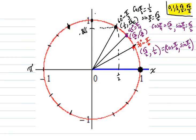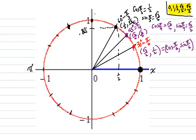This point is at 0, 1 — a 90-degree angle, coterminal to π/2. The coordinates of that point are 0, 1. So the cosine of π/2 is 0, and the sine of π/2 is 1.